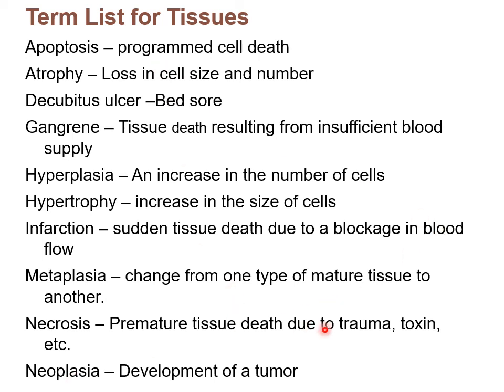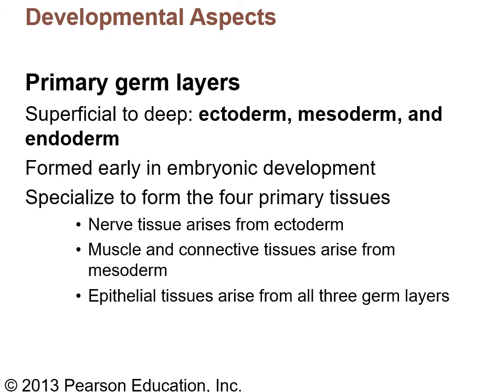Where do these tissues come from? All tissues come from the primary germ layers found early in embryonic development — after the fertilized egg evolves into a structure called a gastrula. The three germ layers are ectoderm, mesoderm, and endoderm, and these give rise to the four primary tissues. Nervous tissue arises from ectoderm. Muscle and connective tissues arise from the mesoderm (meso means middle, and they're in the middle). Epithelial tissue can arise from all three germ layers. That completes chapter four.